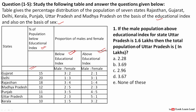For example, if 15 percent of people in Gujarat are below the educational index, then out of this 15 percent, three portions go to males and two portions go to females. That is how the ratio works in this table.